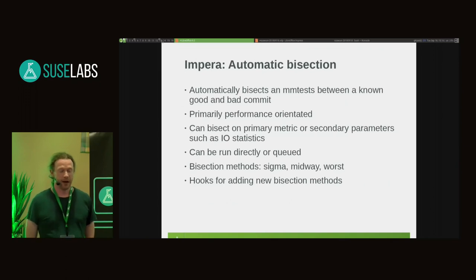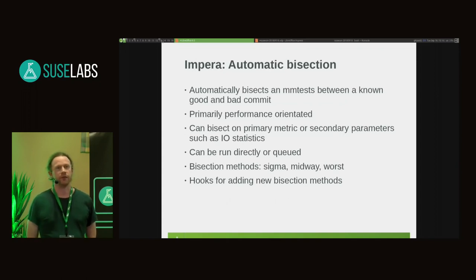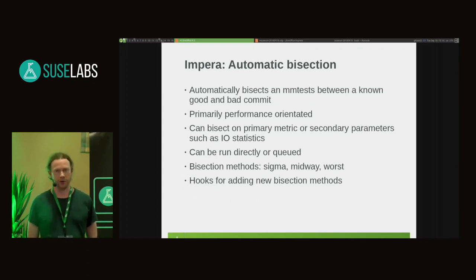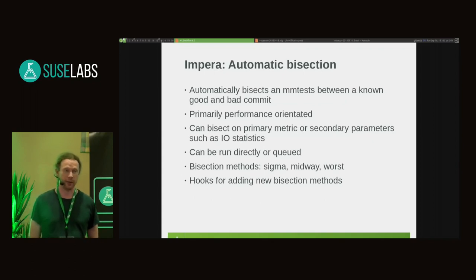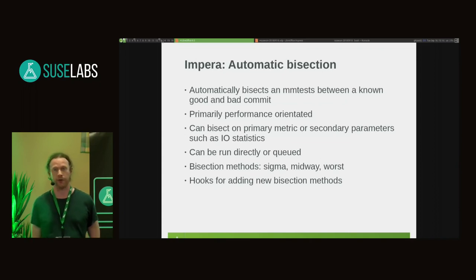Bisecting a performance regression is quite tricky because of the variance issue. There are three methodologies: sigma, midway, and worst. Sigma tries to find the smallest statistically significant regression at the time it was introduced — it finds the first root cause but might miss a very large regression. Midway takes the point halfway between good and bad and tries to find when that happened — it sometimes finds the worst problem but not necessarily the only one. Bisection gets you places, but not everywhere. Many problems require a developer to sit down and analyse from first principles, but we almost always start with bisection because it might work.